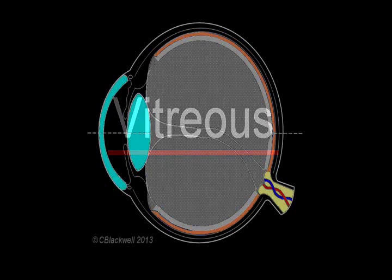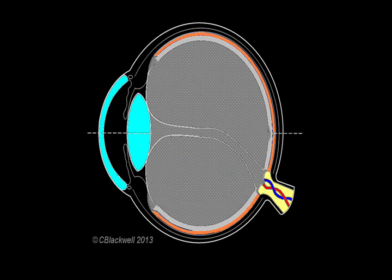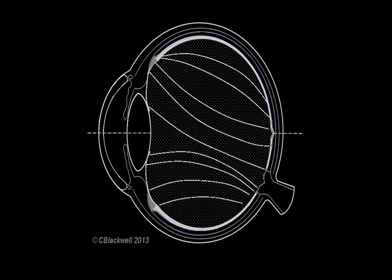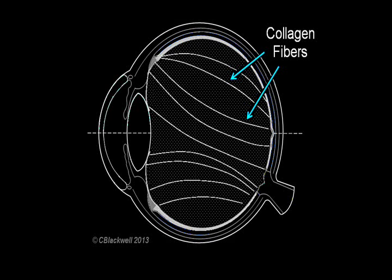Before we get to the retina we will start by looking at the vitreous, the jelly that fills the middle of the eye. Though people tend not to think much about it, it can cause a number of significant problems. Picture the body of vitreous jelly as thick and stringy like egg white. It is composed of a matrix of long collagen fibers which give it its structure and smaller molecules which attract and hold water.